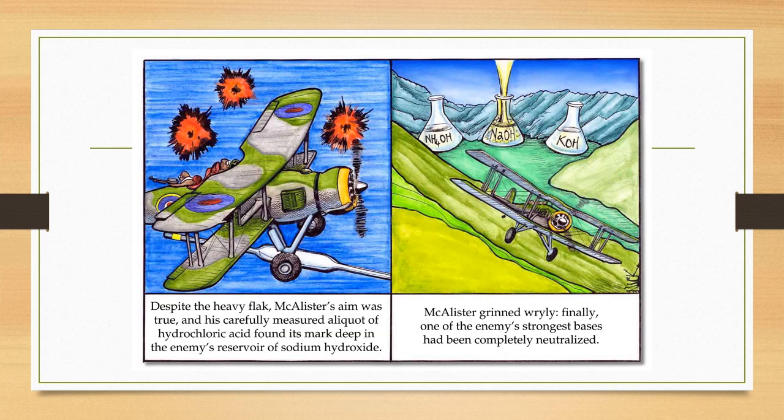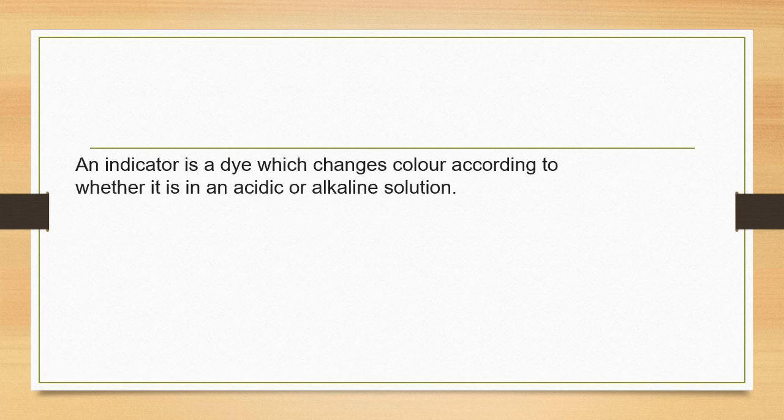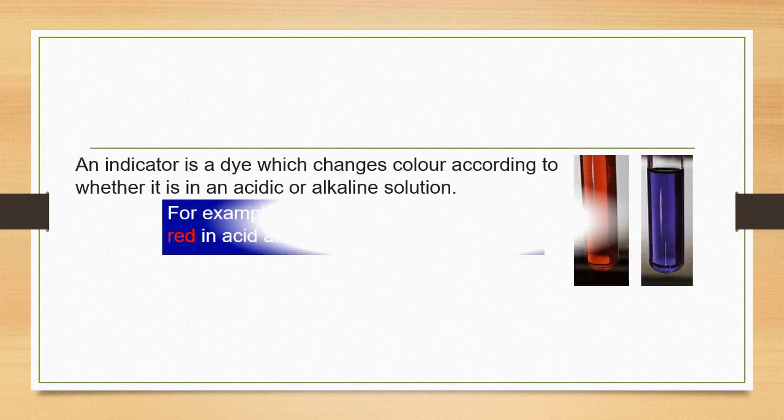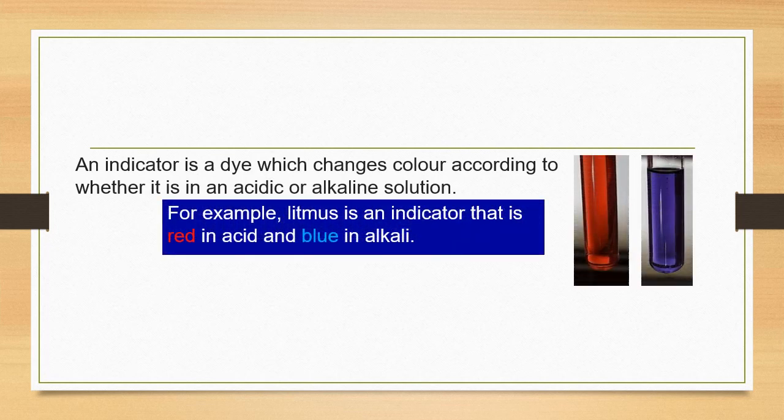Here's a short cartoon illustrating how to neutralize bases. Now, you'll notice there was a lot mentioned about indicators. An indicator is a dye which changes colour according to whether it is in an acidic or alkaline environment. For example, litmus is an indicator that is red in acid and blue in alkali.